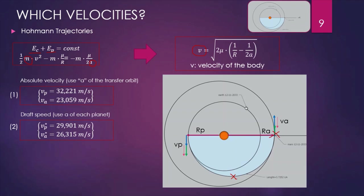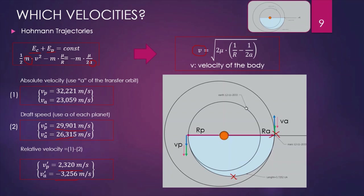But what is the velocity of the planet instead? The velocity of the Earth at the launching position is about 30,000 m/s, and the velocity at the arrival position of Mars is 26,000 m/s. Eventually, the relative velocity — so spacecraft minus planet — is the velocity of our spacecraft relative to the launching or arrival planet: 2,300 m/s for launching from the Earth and minus 3,200 m/s for arrival at Mars, with minus because the spacecraft is traveling against the planet.